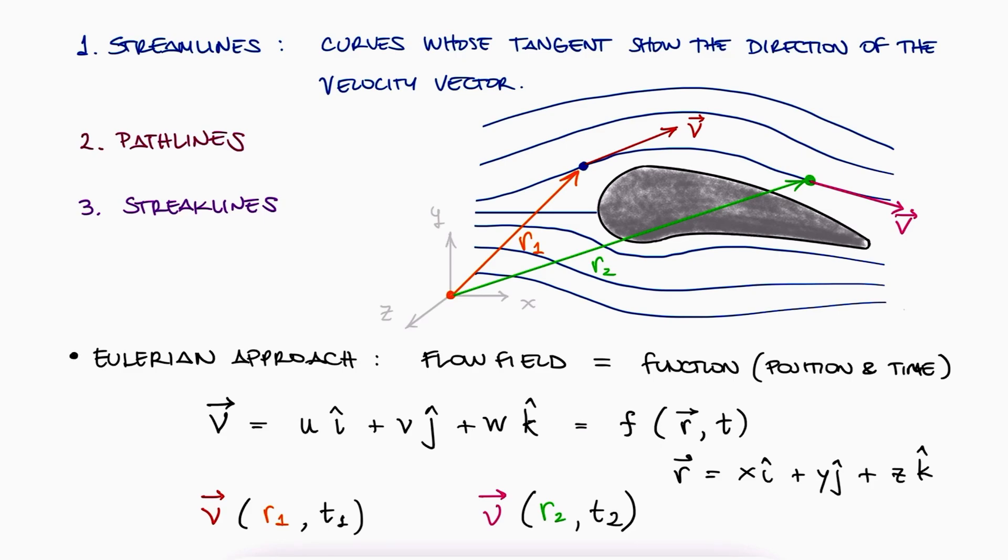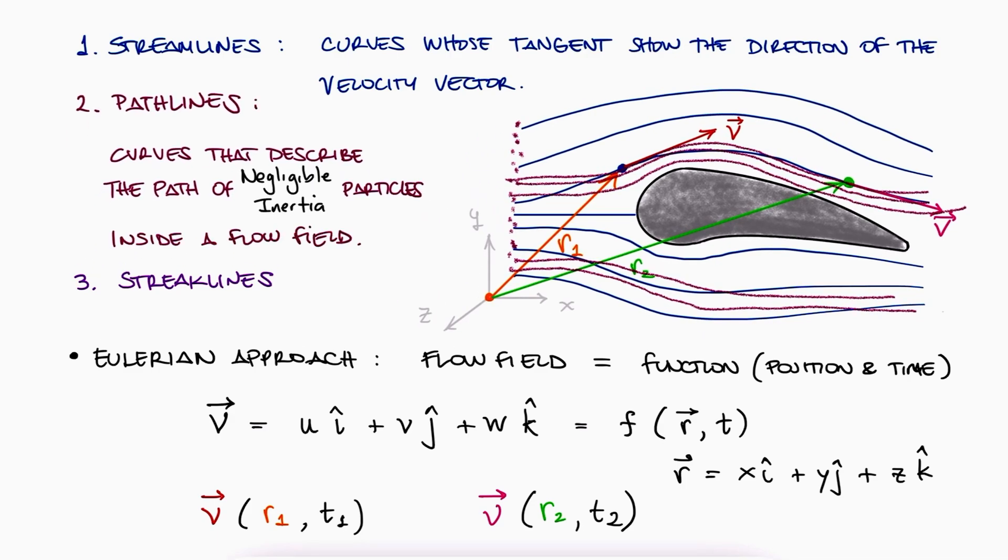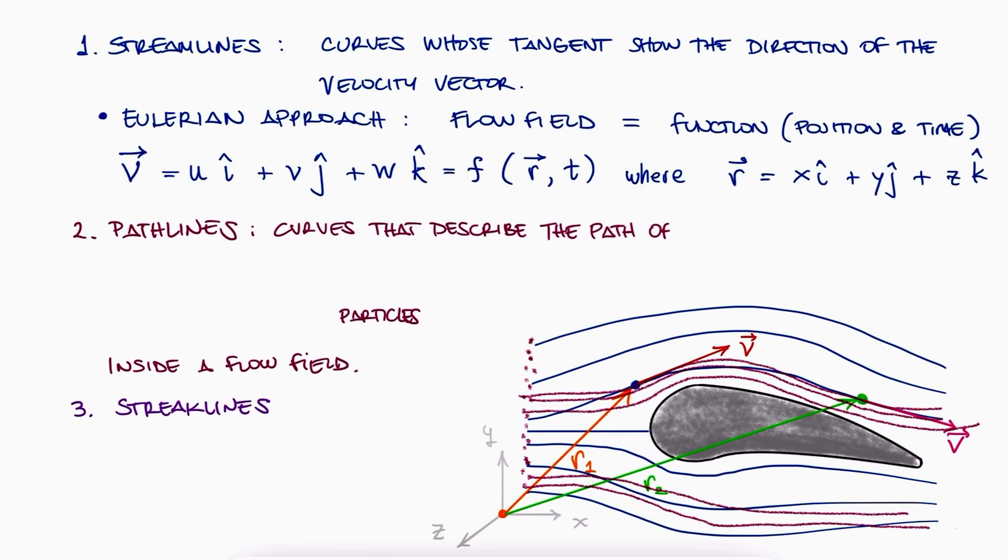Another alternative is we can place really tiny particles that have almost negligible inertia, for example at the inlet, and we can follow them to see what the flow field is doing. The assumption here is that whatever motion they go through would be representative of the motion of the fluid itself. The lines that these particles trace with their motion is what we call pathlines. This approach is what we call the Lagrangian approach.